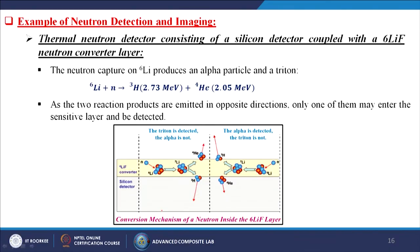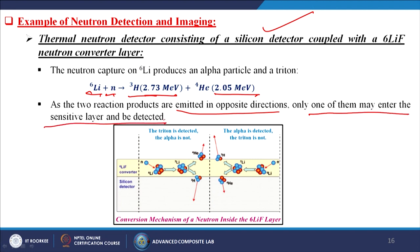An example of neutron detection and imaging is a thermal neutron detector consisting of a silicon detector coupled with a lithium-6 fluoride neutron converter layer. Neutron capture on lithium-6 produces an alpha particle and a triton: ⁶Li + n → ³H (2.73 MeV) + ⁴He (2.05 MeV). As the two reaction products are emitted in opposite directions, only one of them may enter the sensitive layer and be detected — in some cases the triton is detected and the alpha is not, and in other cases the alpha is detected and the triton is not.